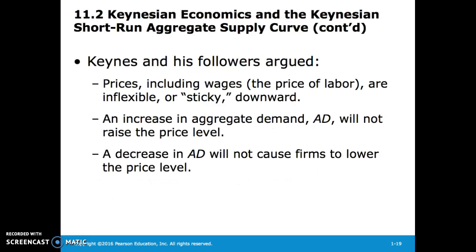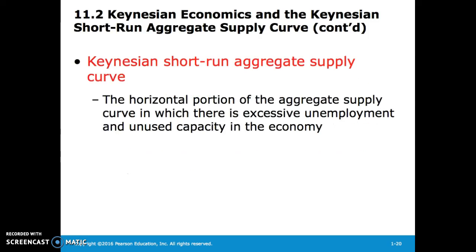His model argued that prices, including wages, are inflexible or sticky downward. An increase in aggregate demand will not raise the price level, and a decrease in aggregate demand will not cause firms to lower the price level. A Keynesian short-run aggregate supply curve is the horizontal portion of the aggregate supply curve in which there is excessive unemployment and unused capacity in the economy.